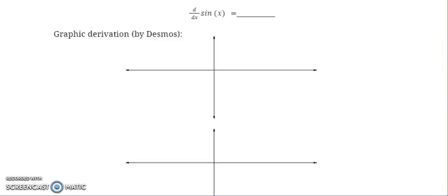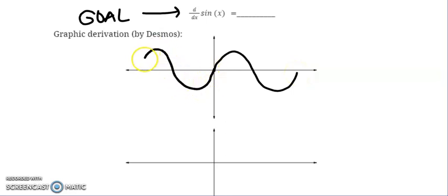To take the derivative of sine, that is our goal. Our goal statement is to find the derivative with respect to x of sine of x. So we're going to start by doing this graphically. We're going to start by looking at a graph of sine of x. Well, sine of x starts at zero, zero, completes one period in two pi.